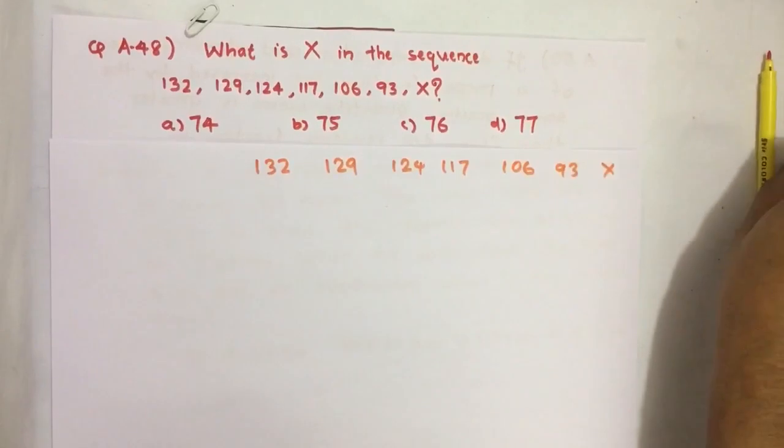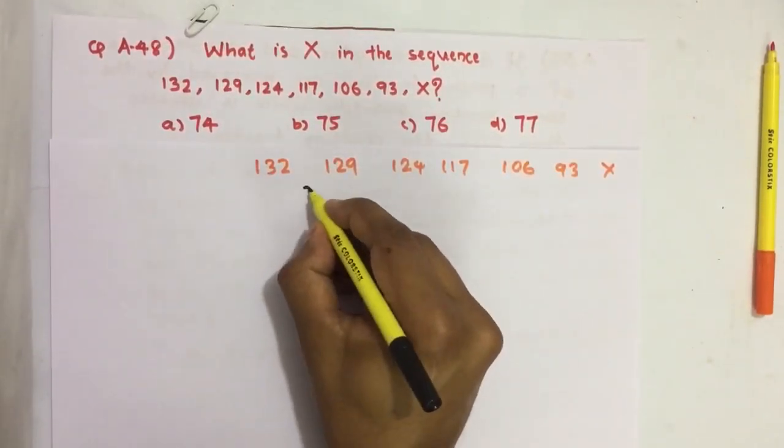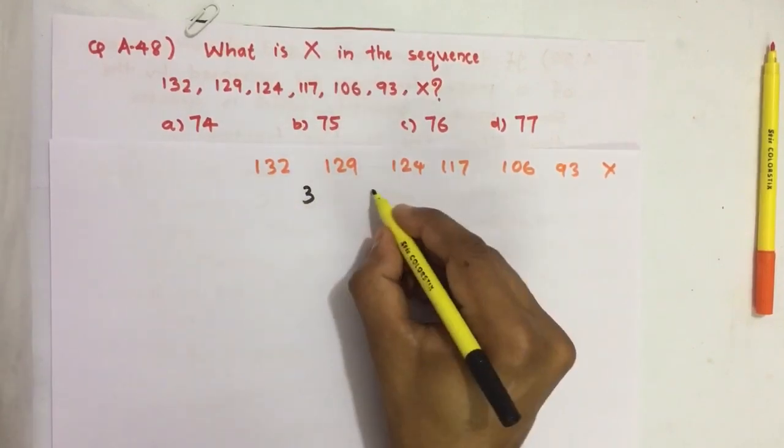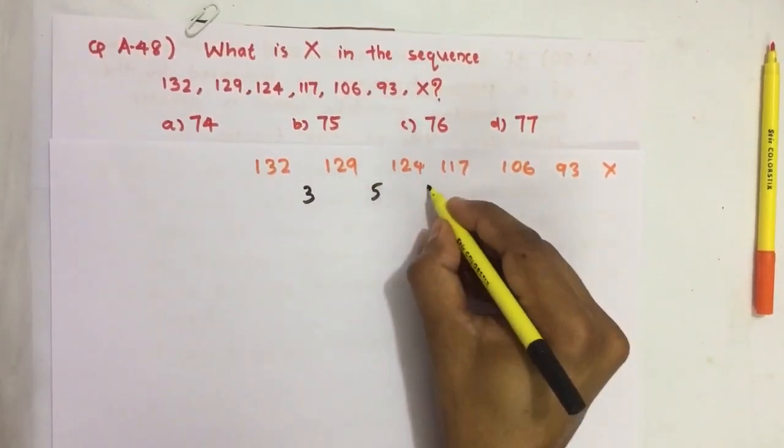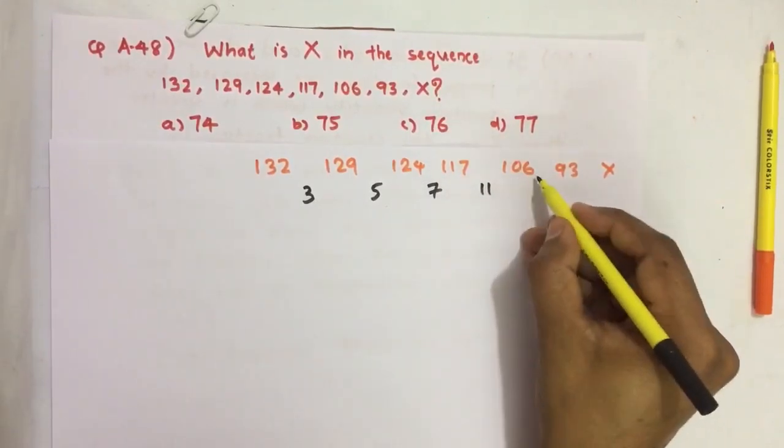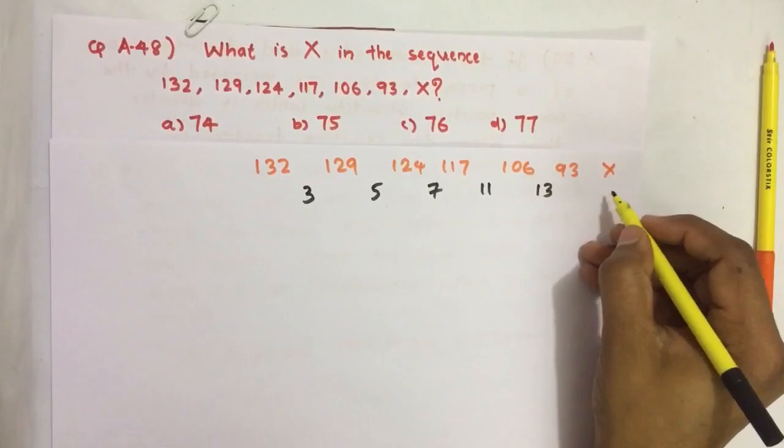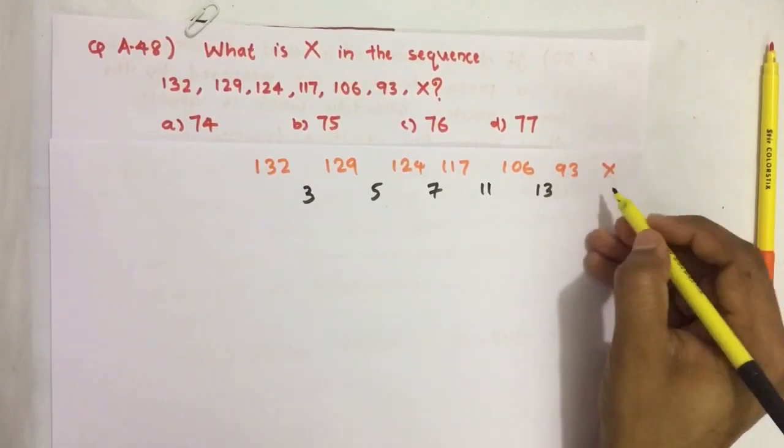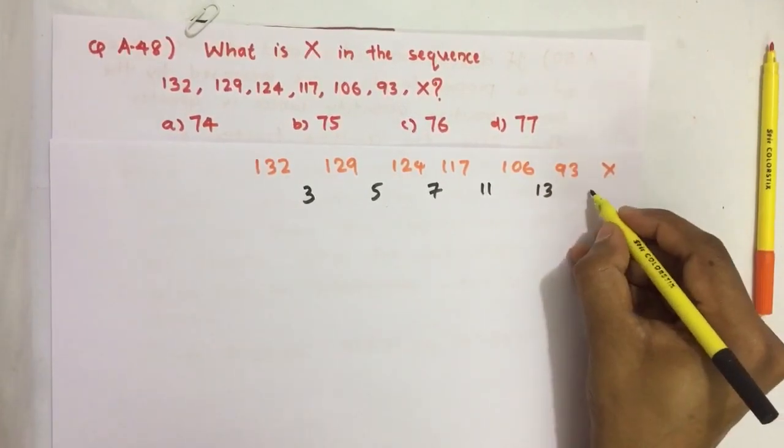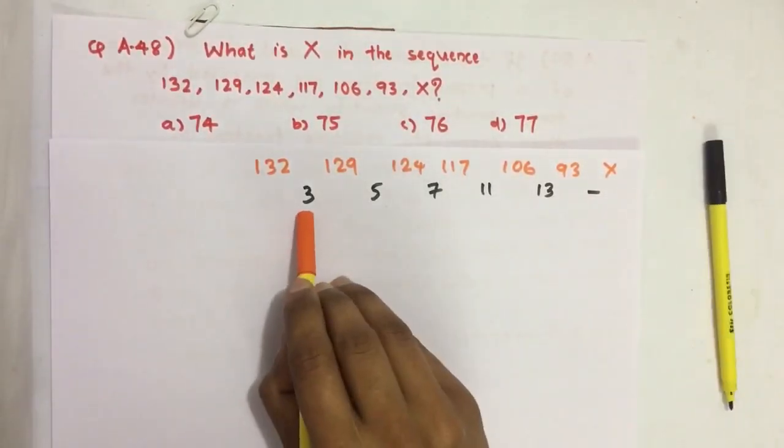So we find the differences. 132 minus 129 is 3. Here it is 5. Here it is 7. It is 11. Here 106 minus 93 we get 13. So we have to find X, so there will be a number here.